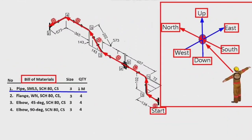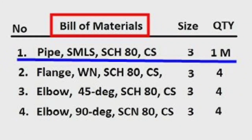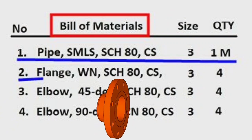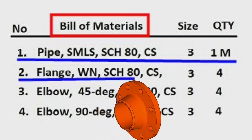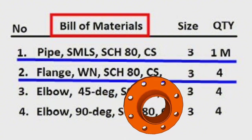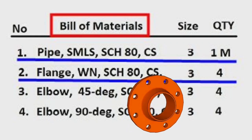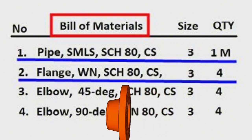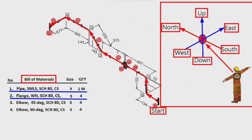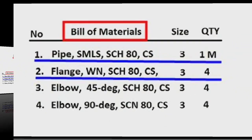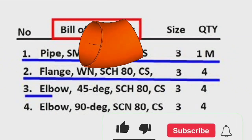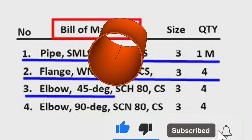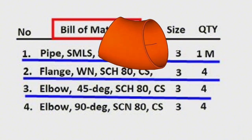Detail number 2 is total 4 pieces: flange, weld neck type, wall thickness schedule 80, carbon steel material, size is 3 inches, quantity is 4 pieces. Detail number 3 was used in 4 places in the pipe isometric: elbow 45 degree type, wall thickness schedule 80, carbon steel material, size is 3 inches, quantity is total 4 pieces.